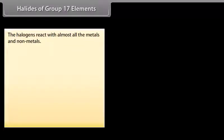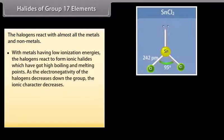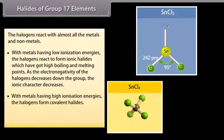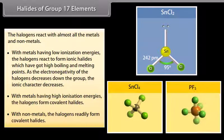Halides of Group 17 elements: Halogens react with almost all metals and non-metals. With metals having low ionization energies, halogens form ionic halides with high boiling and melting points. As electronegativity of the halogens decreases down the group, the ionic character decreases — for example, SnCl₂ and PbCl₂. With metals having high ionization energies, halogens form covalent halides — for example, SnCl₄ and PbCl₄. With non-metals, halogens readily form covalent halides — for example, PF₅ and PCl₃.